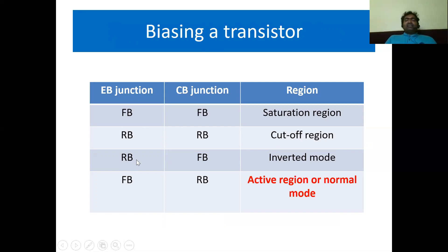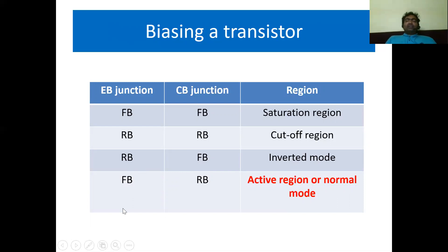If the emitter-base junction is under reverse bias and the collector-base junction is under forward bias, then the transistor is said to be in inverted mode. If the emitter-base junction is forward biased and the collector-base junction is reverse biased, the transistor is said to be in the active region or normal mode. Normally we use the transistor in this mode only.